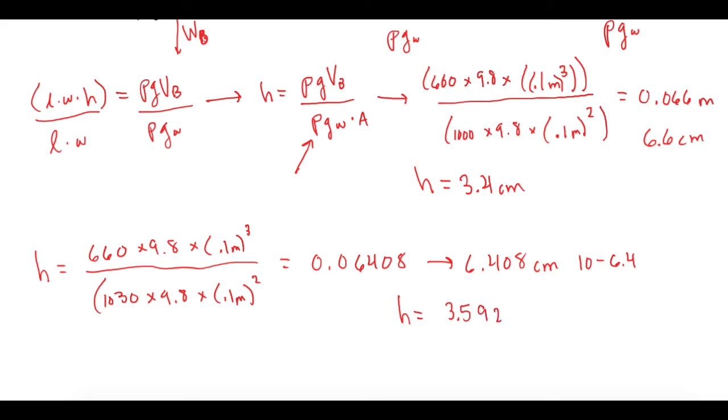And then 10 minus that gives us 3.592. I didn't round in my calculator, I just plugged the values in, so that's why I get that. Or a height of 3.6 centimeters from the top of the water down in salt water.